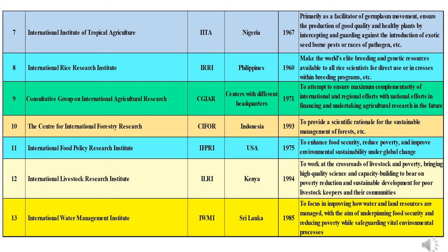Seventh is IITA — International Institute for Tropical Agriculture — headquartered at Nigeria, established in 1967. It is a non-profit institution that generates agricultural innovations to meet Africa's pressing challenges of hunger, malnutrition, poverty, and natural resource degradation, working across sub-Saharan Africa. Eighth is IRRI — International Rice Research Institute — headquartered at Los Baños, Manila, formed in 1960. It is dedicated to alleviating poverty and hunger among people who depend on rice-based agri-food systems.